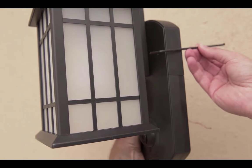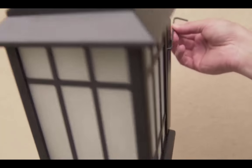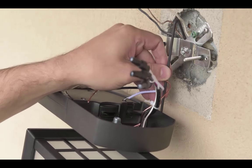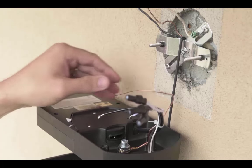We've included a holding hook with the installation hardware to provide an extra helping hand. Use this hook to suspend your light from the bracket and you'll have both hands free to begin wiring.